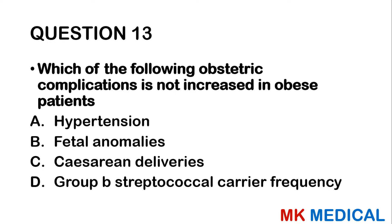Question 56: All are used to shrink fibroids EXCEPT: A — estrogen. B — danazol. C — mifepristone. D — gonadotrophin-releasing hormone analog. Fibroids are benign tumors of the myometrium made of smooth muscle cells driven by estrogen. Before menopause they tend to grow; after menopause they remain the same size. Giving estrogen to a patient with fibroids would make them grow larger. The answer is A — estrogen.